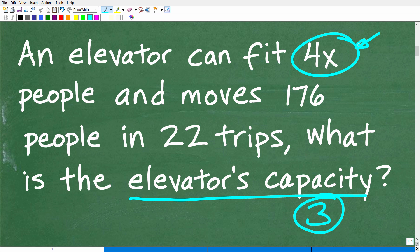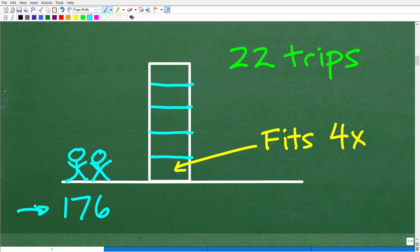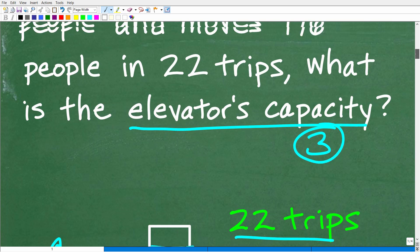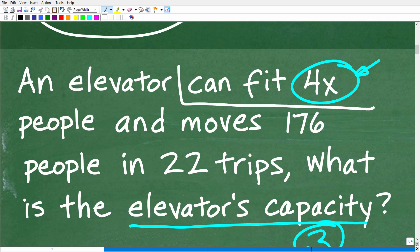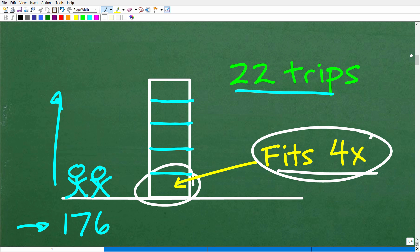Now once we understand the question, what we want to do is try to model this situation. And a good way to model anything is to come up with a kind of sketch or some sort of figure or table of values. Now of course, some problems are easier to do than others. And the great thing about math is you could be creative. You could do it whatever particular way. So I'm going to sketch out the situation. We have 176 people right here. And let's suppose here's my building with my elevator. And it took 22 trips to move maybe these folks up to maybe the fifth floor. All I know is that this elevator took 22 trips to move 176 people and it fits, it can move if this elevator fits 4x people at a time.